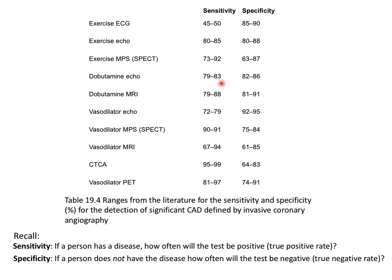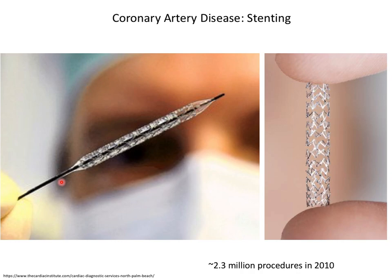The listed sensitivity and specificity values are generous estimates, usually made by people who favor the technique being tested. When tested objectively, you often get different results — which we'll see in an example shortly. Once you've detected the disease, can you do anything about it?